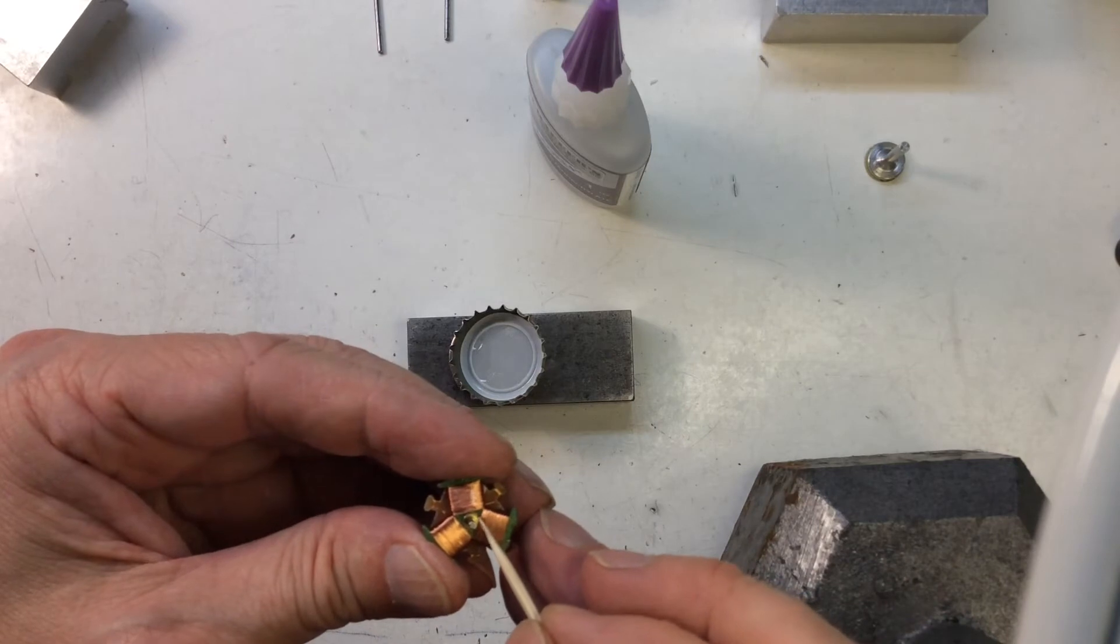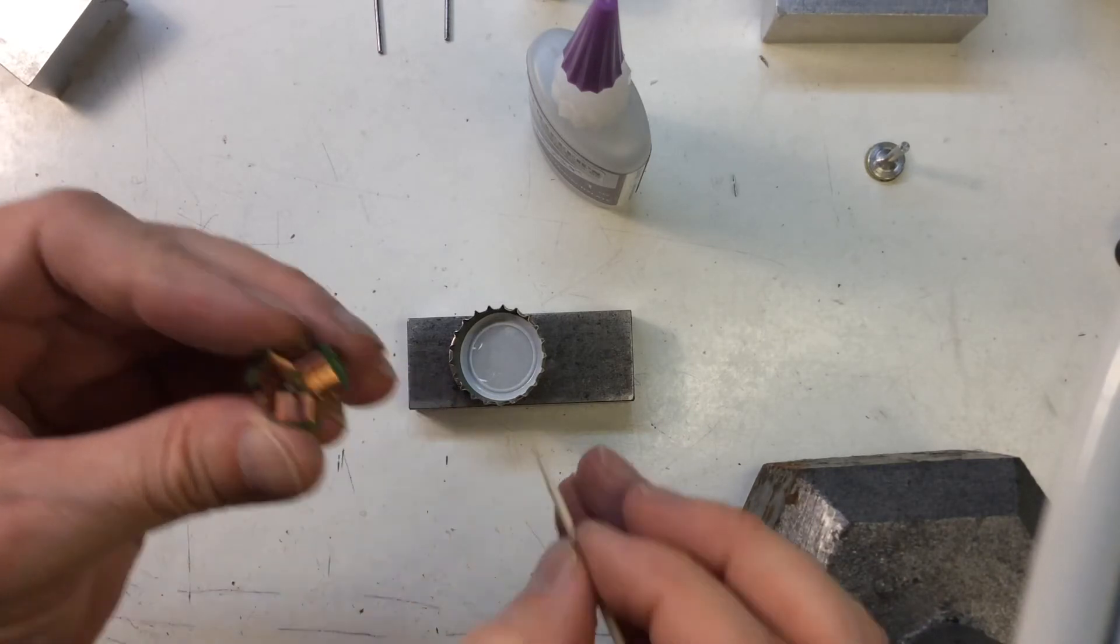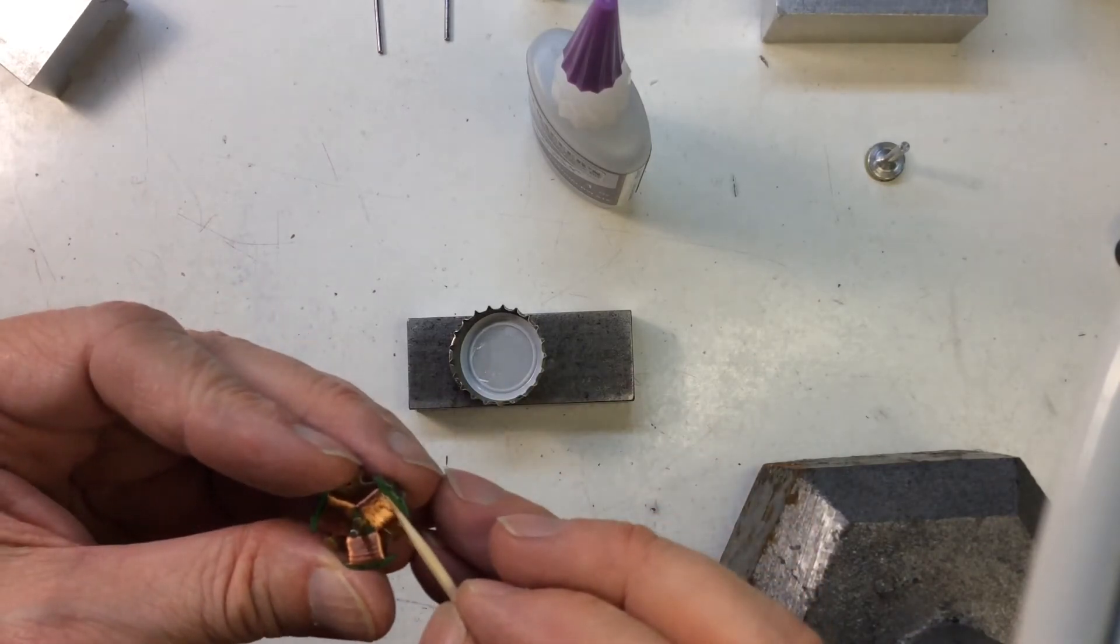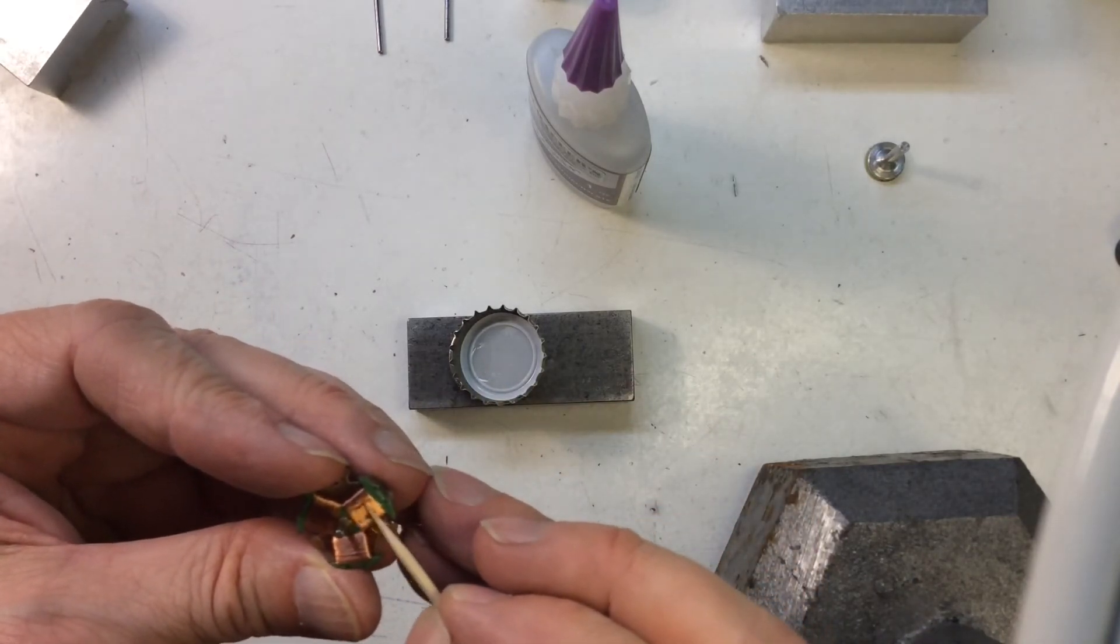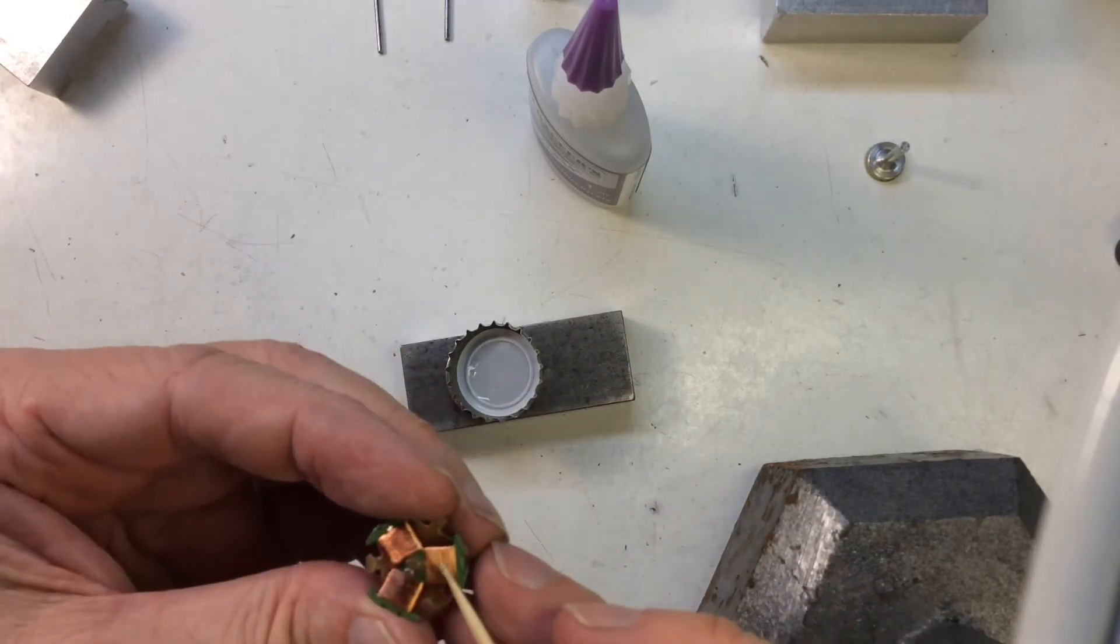Next pole. You don't have to cover the whole thing. Just make sure you get a bead down there. Get all the wires on top and they're kind of glued down.